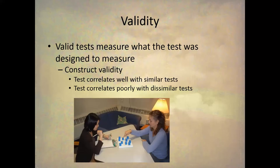What that means is, if I have a test and I expect it to measure body image beliefs, it should only measure body image beliefs and it should not measure self-esteem or mood. Sometimes the questions you ask on tests will pick up two different constructs, and validity means that the test only measures one construct — the one that you intend it to.